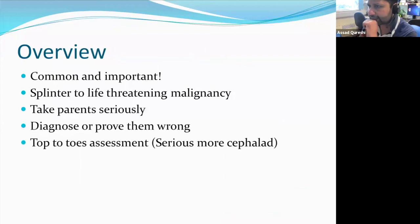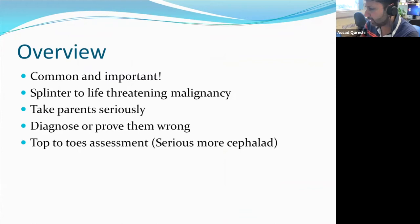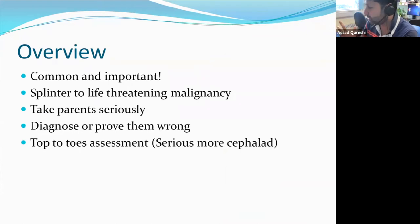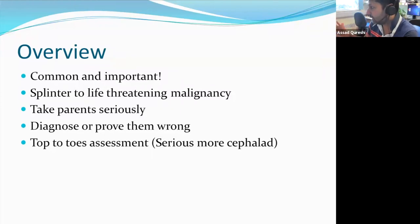Assessment of limping children is very important because it encompasses everything from a simple splinter in the toe to a child who's got Ewing sarcoma and a terminal diagnosis. Children are very robust — they just want to play. It's always worthwhile taking parents' concerns seriously, because the parent will see their child over many days and see how symptoms evolve, whereas we just have a snapshot.